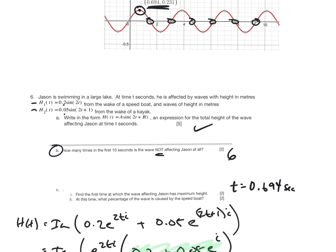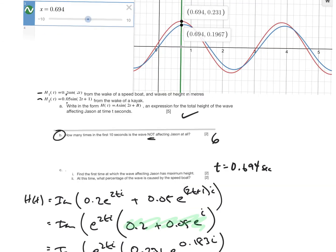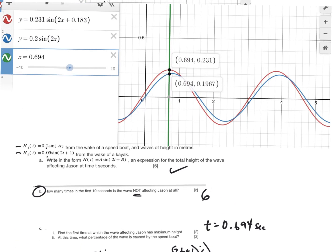And then it says, at this time, what percentage of the wave is caused by the speedboat? Well, I know this is how much the total wave is. And if I want to know what the speedboat wave is. Okay, I just put a new graph in there. So if I wanted the percentage of the wave caused by the speedboat, well, at this particular time, 0.694, I've added this is the speedboat, this is the combined. And so I'm going to go, this is how much the speedboat is contributing overall. So 0.231.